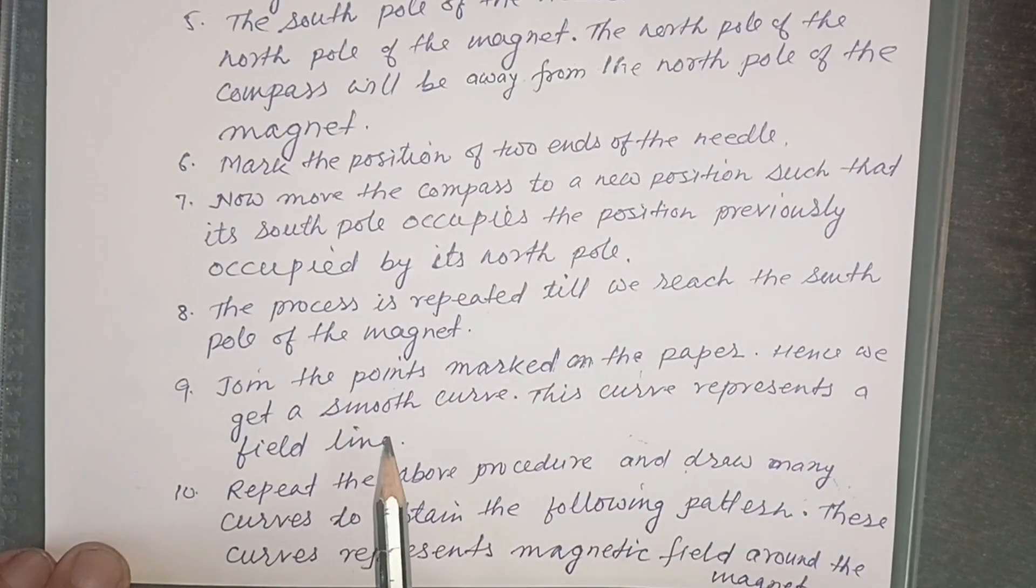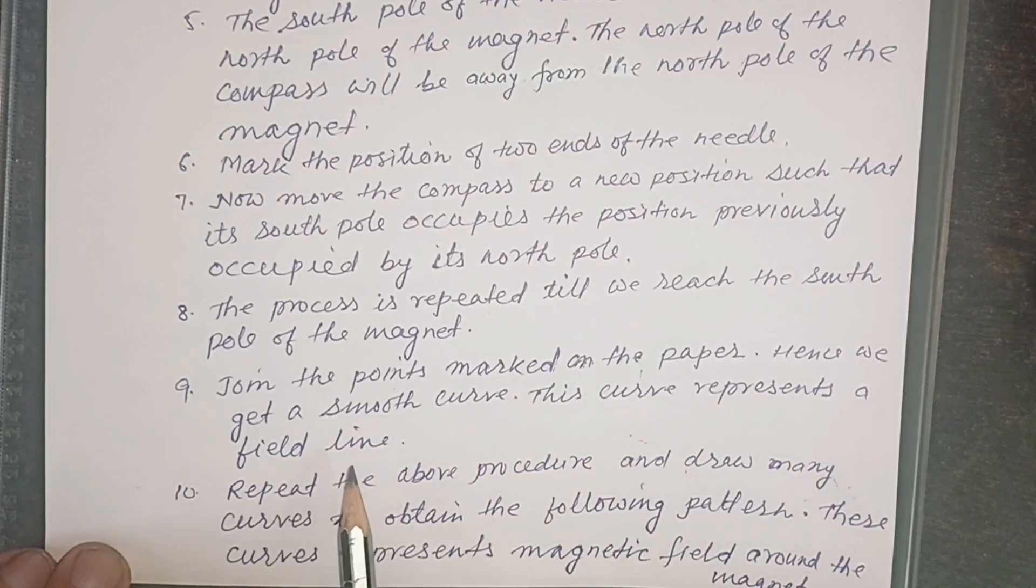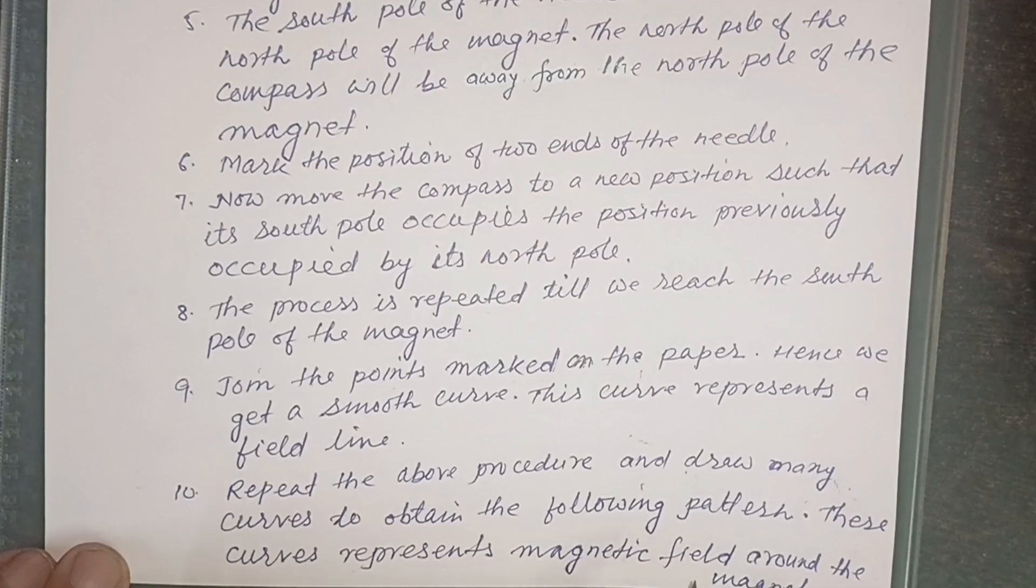Hence, we get a smooth curve. This curve represents a field line. Repeat the above procedure and draw many curves to obtain the following pattern. These curves represent the magnetic field around the magnet.